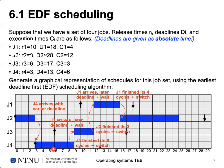Job four starts running. At time six, job three arrives, but job three's deadline is time 17, which is later than job four's deadline, so job four continues executing. Once job four finishes all six time units, we switch to job three, which was waiting. Job three takes three time units. At time 10, job one becomes available with deadline 18, but since job three's deadline is 17, job three continues running and successfully completes.